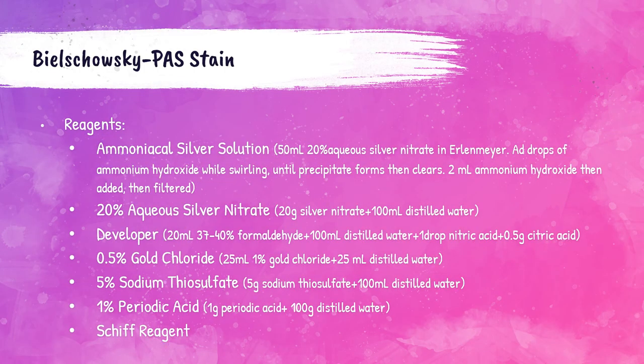Reagents for the Bielschowsky PAS stain include ammoniacal silver solution, 20% aqueous silver nitrate, developing solution, 0.5% gold chloride, 5% sodium thiosulfate, 1% periodic acid, and Schiff reagent.